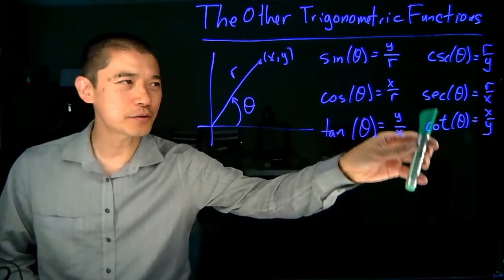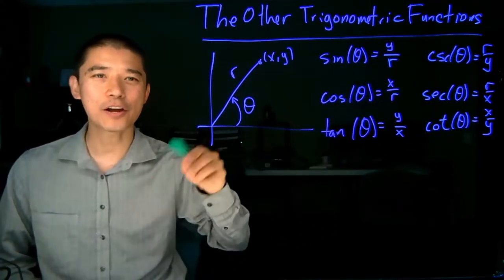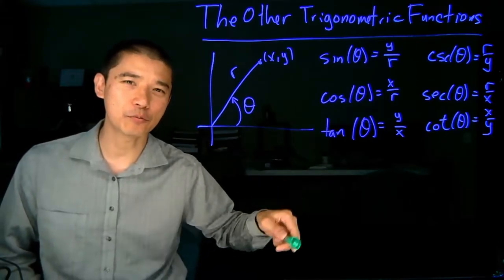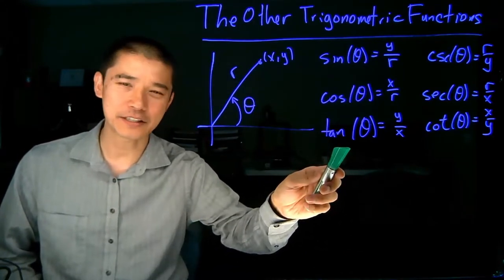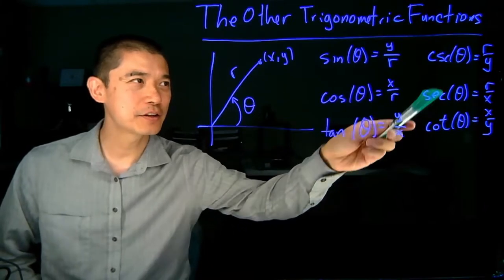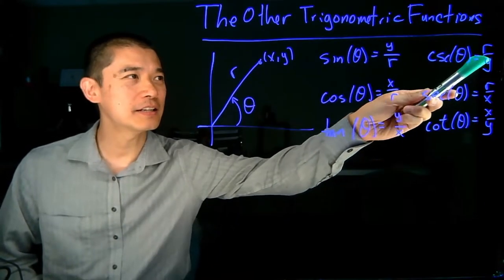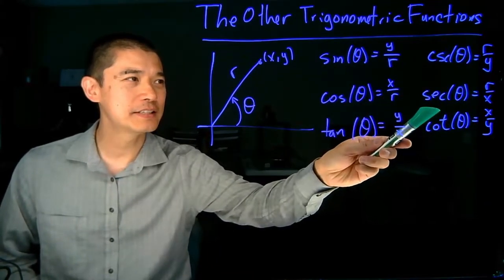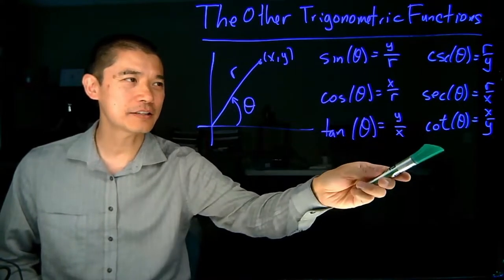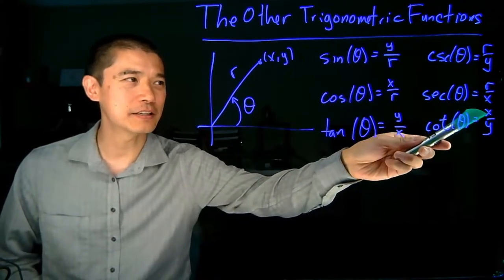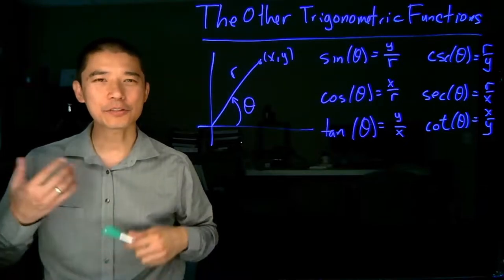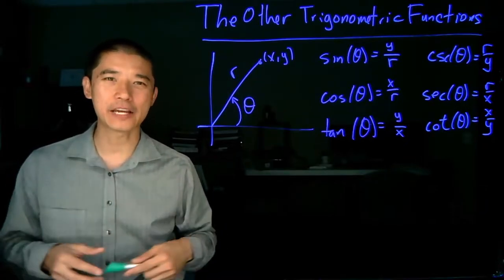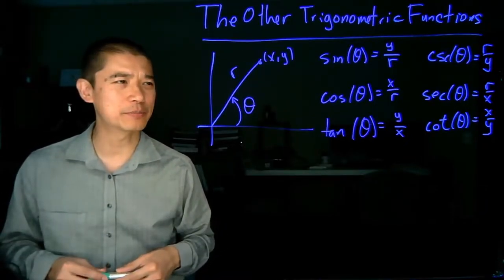All these other four functions are just other relationships between x, y, and r. So tangent theta is y over x, cosecant theta is r over y, secant theta is r over x, and cotangent of theta is x over y. Now, it'll take some time to get used to saying those names, but with a little bit of practice, it'll be pretty easy.